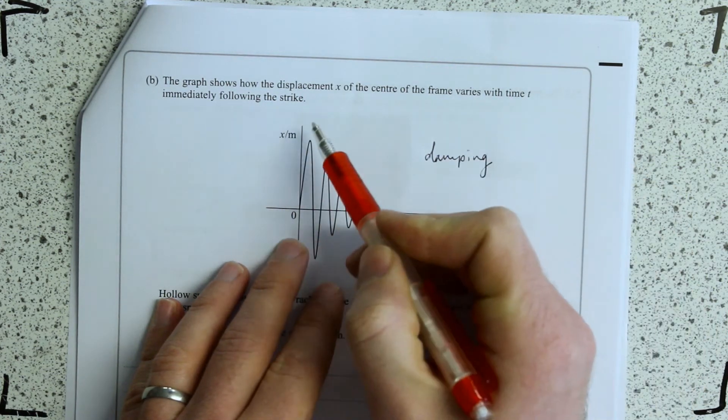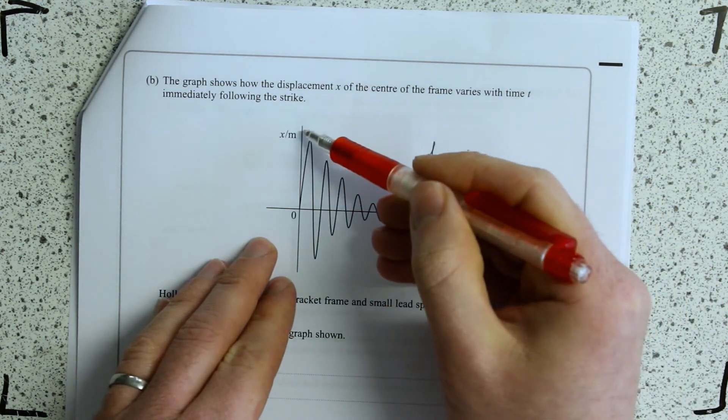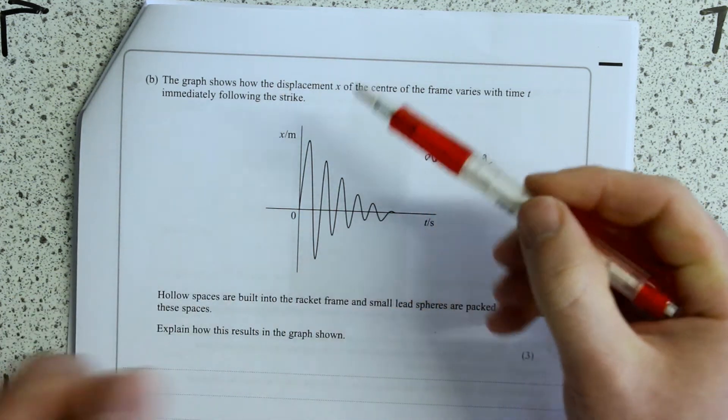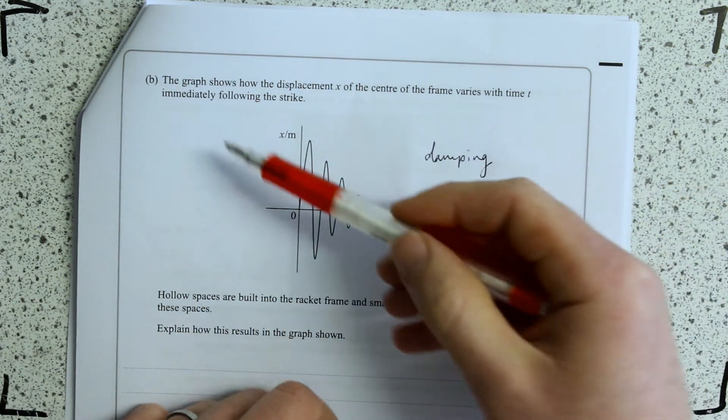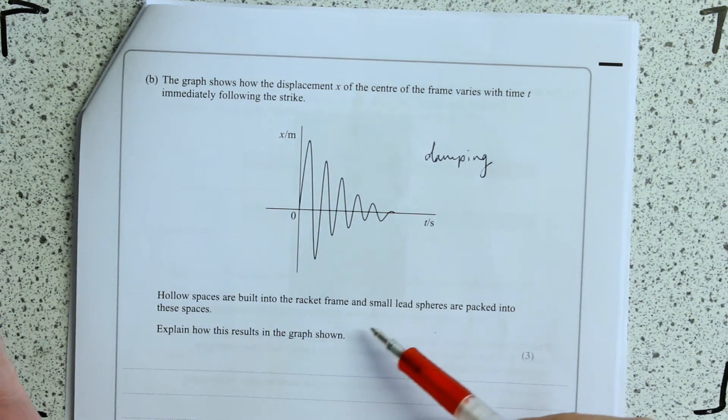OK, this is displacement against time. You can see that the amplitude of that oscillation has reduced as time goes on. And it's reduced exponentially, but it's not going to ask you about exponentials. Hollow spaces are built into the racket frame, and small lead spheres are packed into these spaces.